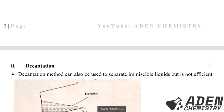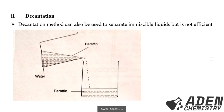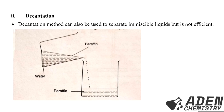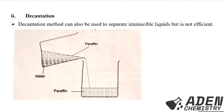Next, we are going to see the second method of separating immiscible liquid mixtures — the decantation method. Decantation can also be used to separate immiscible liquids, but it is not efficient, because in the process of decanting, some water passes along with the paraffin.